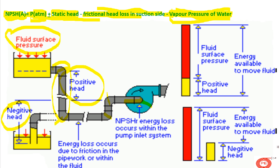As I mentioned in part 1, NPSH available must always be greater than NPSH required — only then will the problem of cavitation be stopped. Otherwise cavitation will persist in the pump and the pump will not work properly, leading to malfunction. I hope you now understand net positive suction head calculation. Please like, follow, and subscribe to our channel, and let us know in the comments if you have any queries or feedback. Thank you for watching.